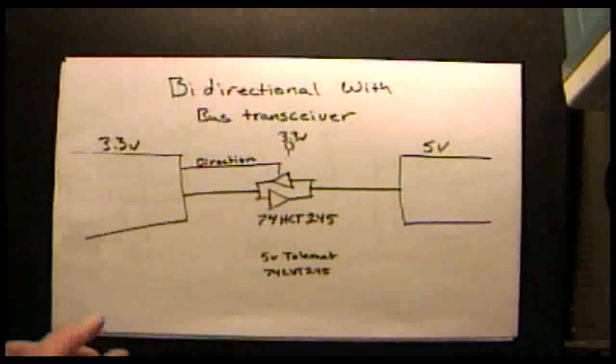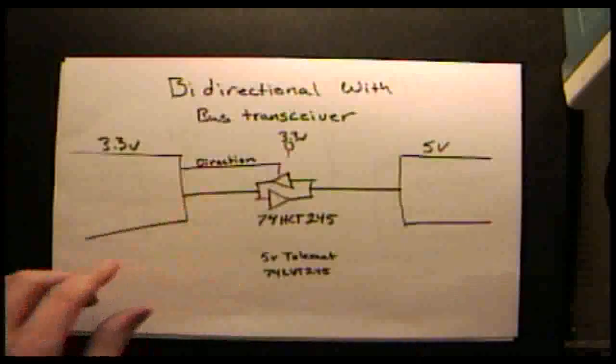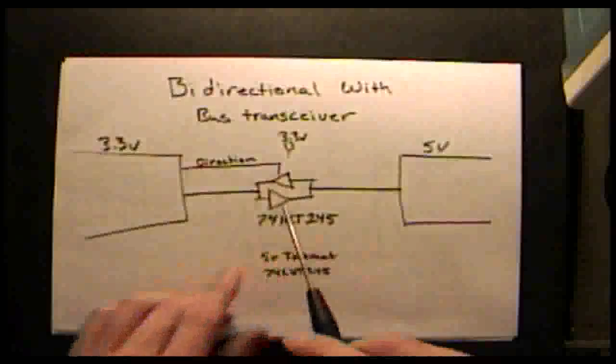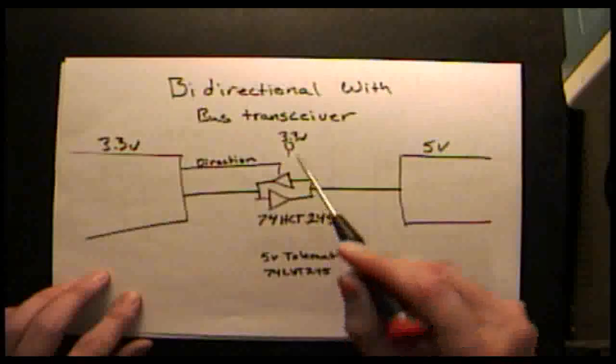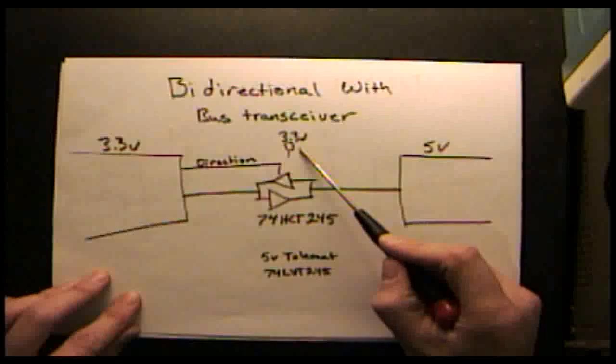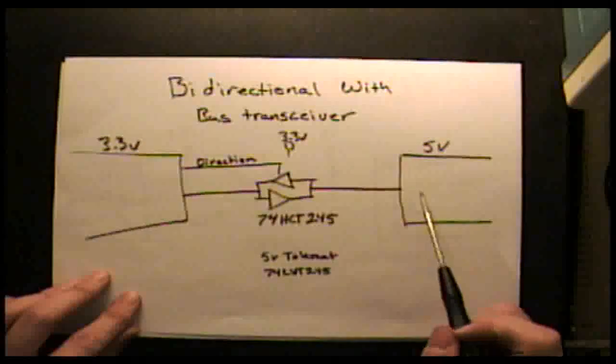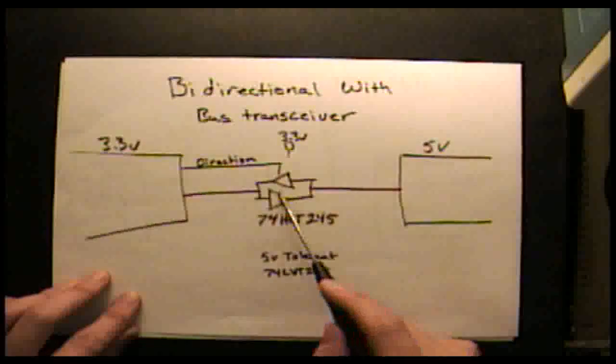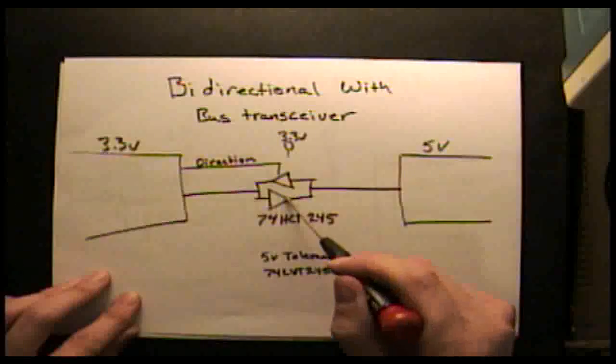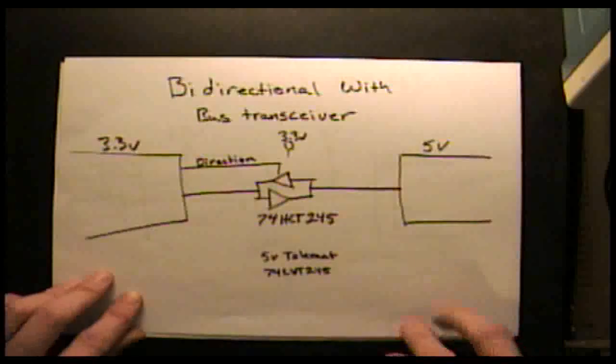If you need to communicate bidirectionally, you'll need to have a bus transceiver that can change direction with a direction pin, then that is supplied by 3.3 volts so that you will isolate the 5-volt I/O from the 3.3-volt I/O.